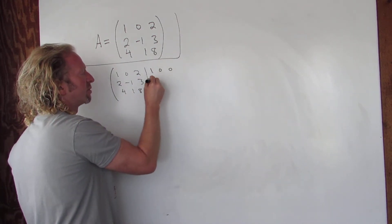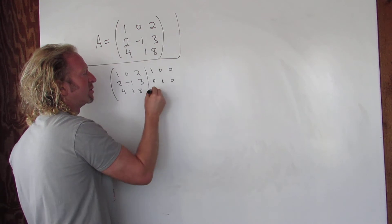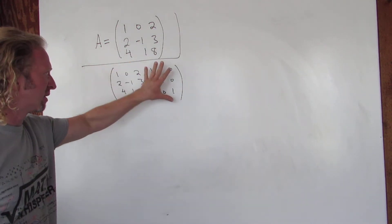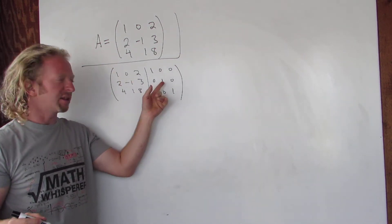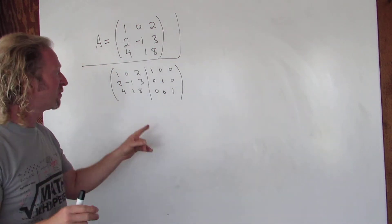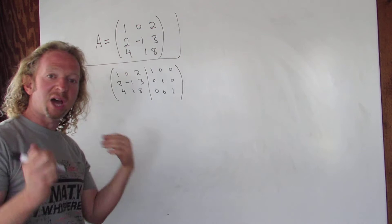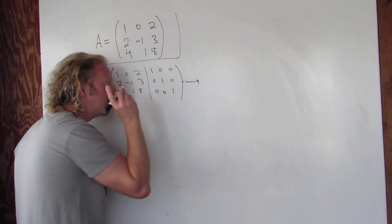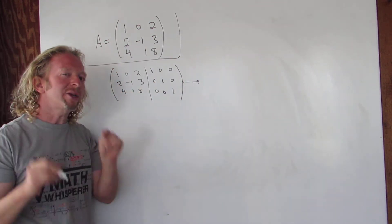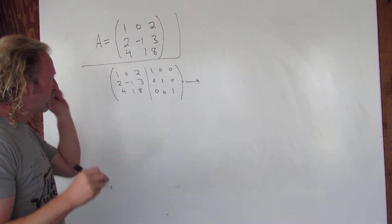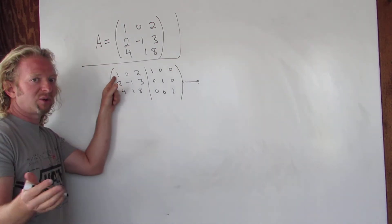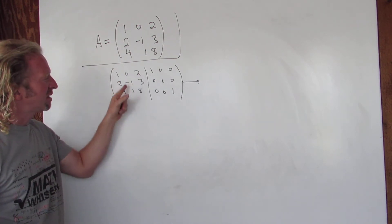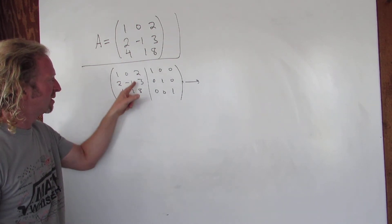The identity matrix is: 1, 0, 0, 0, 1, 0, 0, 0, 1. The goal is to make the left side look like the identity matrix. If you make this look like the identity, then you're done and the inverse is going to be whatever's on the right side. We'll do it one column at a time: make this a 1, make these zeros, make this a 1, make these zeros, make this a 1, make these zeros.